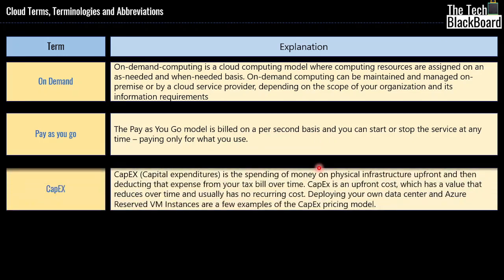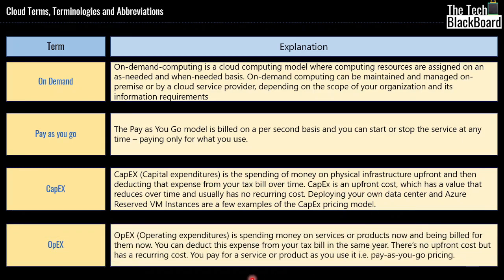Coming to the term CAPEX — CAPEX is made up of two words: capital and expenditure. Capital expenditure is the upfront cost you pay for building infrastructure, buying servers, memory, etc. Now let's understand OPEX. Similarly, OPEX comprises of two words: operational and expenditure. Unlike CAPEX, operational cost is not spent upfront but is an expenditure on a recurring basis. For example, you pay the bill for your mobile usage every month, while the purchase of the mobile itself is an example of CAPEX.